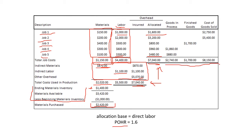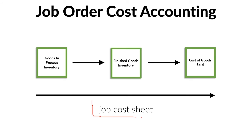These numbers represent the total cost of each job. For Job 5: $100 + $300 + $480 = $880. For Job 3: $400 + $500 + $800 = $1,700. Jobs 4 and 5 are in goods-in-process because they're still being manufactured. Job 3 is in finished goods because it's been completed. Jobs 1 and 2 are in cost of goods sold because they've already been sold. The job cost sheet travels from goods-in-process to finished goods to cost of goods sold depending on its stage in production.